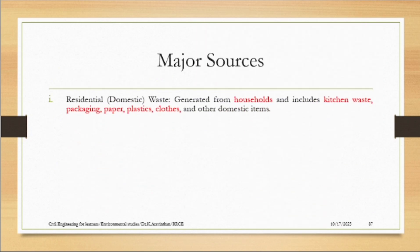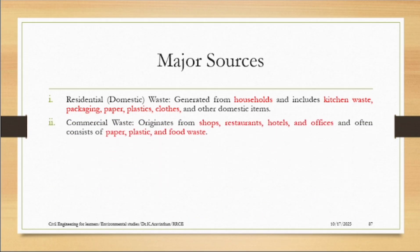Let me discuss the sources where we get the different types of solid waste. One of the sources is residential — from our houses. The types of waste we generate include kitchen waste, plastic, paper, and clothes. These are the wastes that come from each and every household.